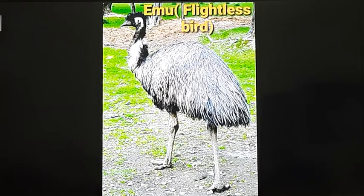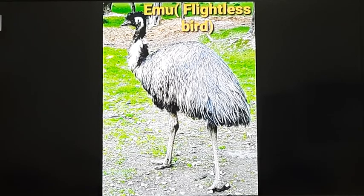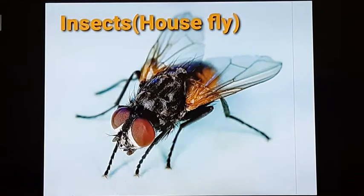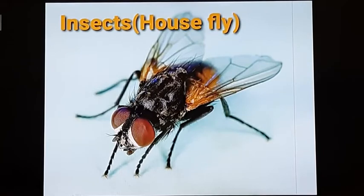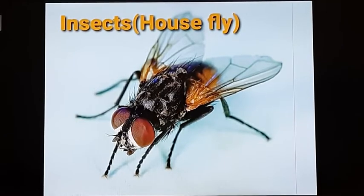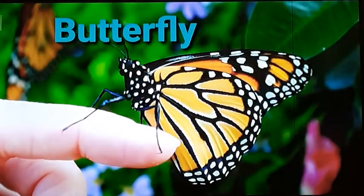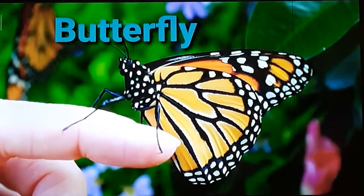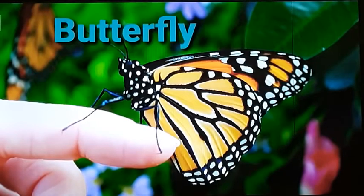Here you can see the beak of the emu. There are some insects which can also fly in air, like the housefly, mosquitoes, and butterflies. The housefly has a small body and light wings due to which it can fly. The butterfly has quite beautiful wings and a very light body due to which it can also fly.